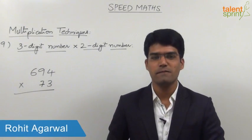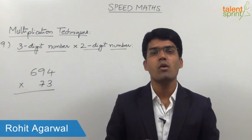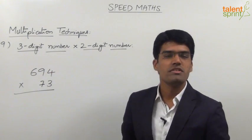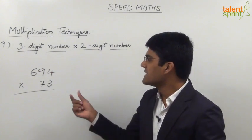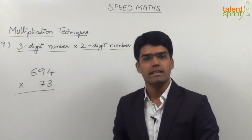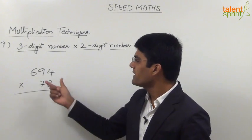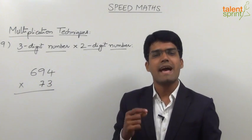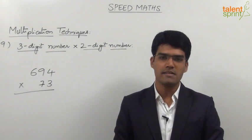Having done the multiplication of three-digit numbers, let us now see how we can multiply a three-digit number with a two-digit number. For example, let us say we have to multiply 694 with 73. Multiplication of a three-digit number with a two-digit number is as good as multiplying two three-digit numbers.